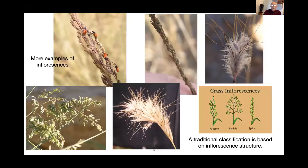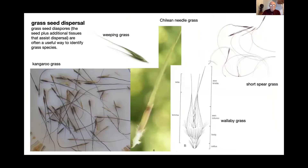There are more examples of inflorescences. The example in the bottom right-hand corner shows what you find in textbooks about the different ways you can describe an inflorescence — whether it's a raceme, a panicle type, or a spike type. As you get into it, these sorts of terms are helpful. Now we talk about the diaspore, or grass seed dispersal.